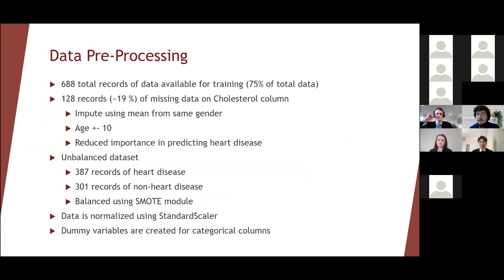We decided to split up the heart prediction data set such that 75% is used for ML training and the remaining 25% is used for validating the model. Before feeding the data into the model, we examined the data set for any missing values or outliers. We found that out of 688 records, 128 of them have missing values on the cholesterol column. We decided to impute those missing values using the means of individuals of the same gender and within an age range of plus or minus 10. However, this method reduces the importance of cholesterol in predicting heart disease. We then balanced the data set and normalized the data to improve accuracy and precision of our model, and finally created dummy variables for the categorical data.